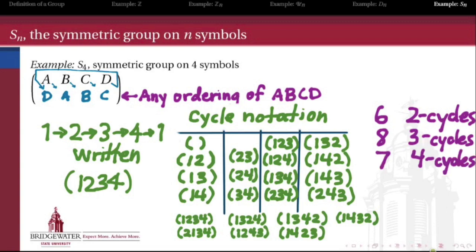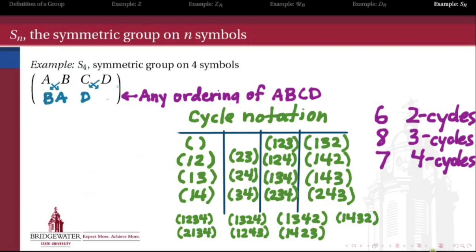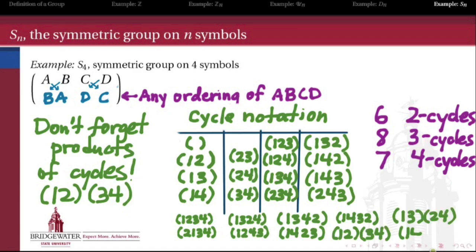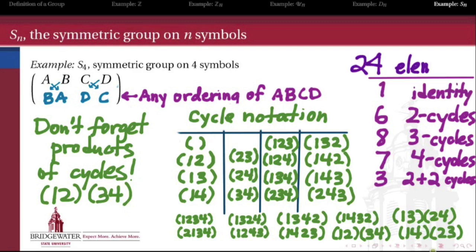The elements we're still missing are those obtained by composing two disjoint cycles. For instance, if I swap A and B, and also swap C and D, that can't be written as a single cycle, but it can be written as the product (1 2)(3 4). There are three distinct such elements, which we call two-plus-two cycles — a product of two cycles each of length two. Combined with the one identity element, this group has a total of twenty-four elements.